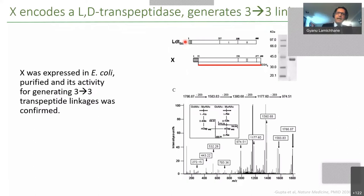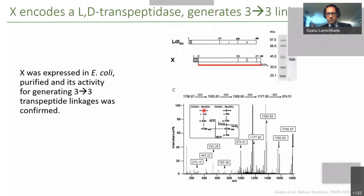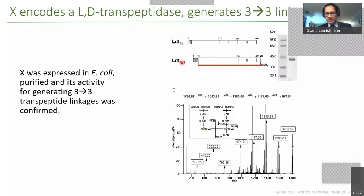We expressed this protein in E. coli, purified it, and did a cross-linking assay with the monomers. From the mass spectrogram, we confirmed that this particular protein — now an enzyme — was able to link the third amino acid to the third amino acid. This allowed us to provide evidence that this is the elusive enzyme that makes 3-3 linkages in Mycobacterium tuberculosis. We named it LD transpeptidase in Mycobacterium tuberculosis. Although the existence of these linkages was known, the enzyme was not known — and people had been unable to find it because it is evolutionarily completely unrelated to the DD transpeptidases.